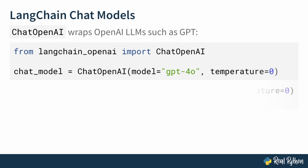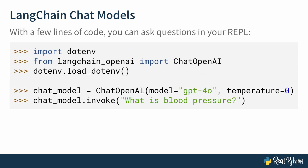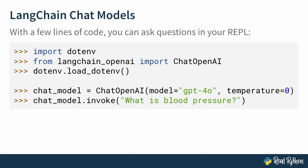With minimal code you can already start asking questions in your REPL. You just need to make sure your environment has access to the API key, which you do by importing dotenv and loading the environment variables. Then import the ChatOpenAI class, instantiate it, and you can use the .invoke method on the chat model and pass it a string — any sort of prompt you want to pass. LangChain will make an API request and return the result to you.